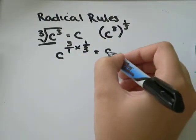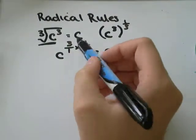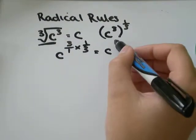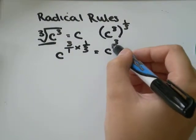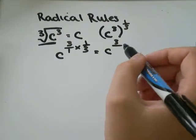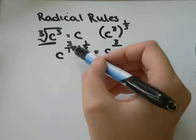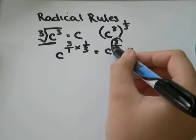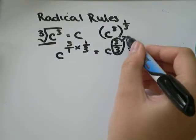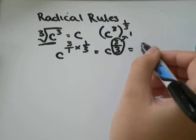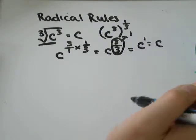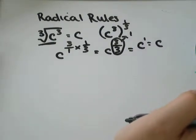To multiply exponents, you multiply the tops together: 3 times 1 is 3. You multiply the bottoms together: 1 times 3 is also 3. So 3 divided by 3 equals 1, and c to the power of 1 is equal to c.